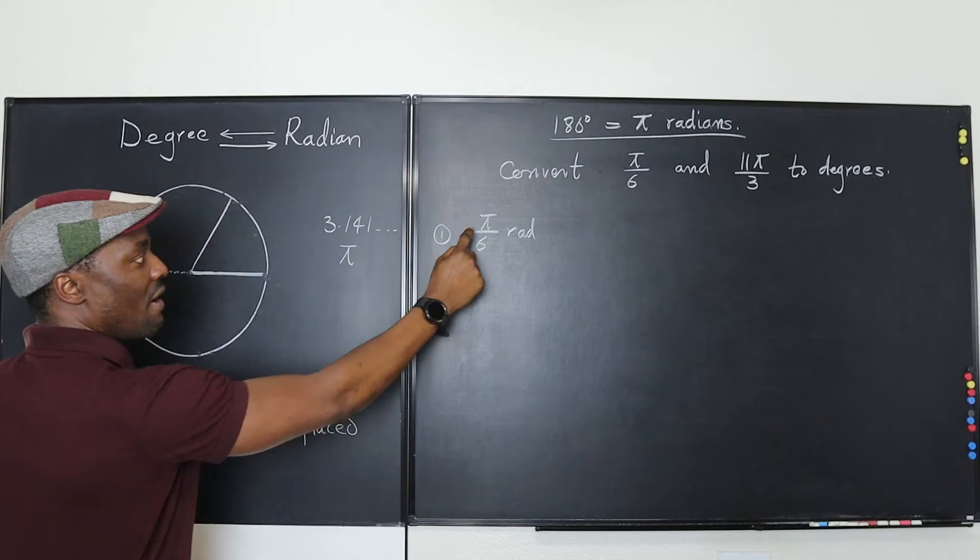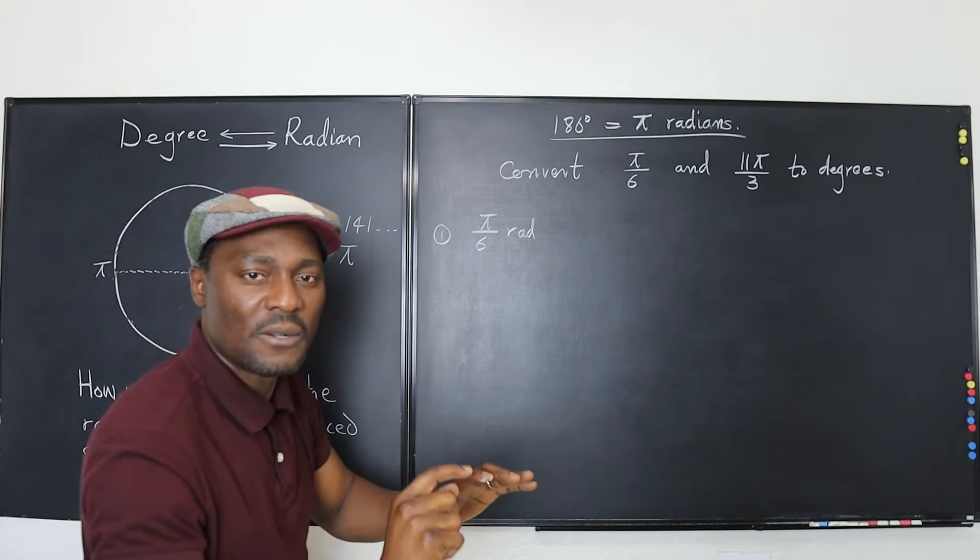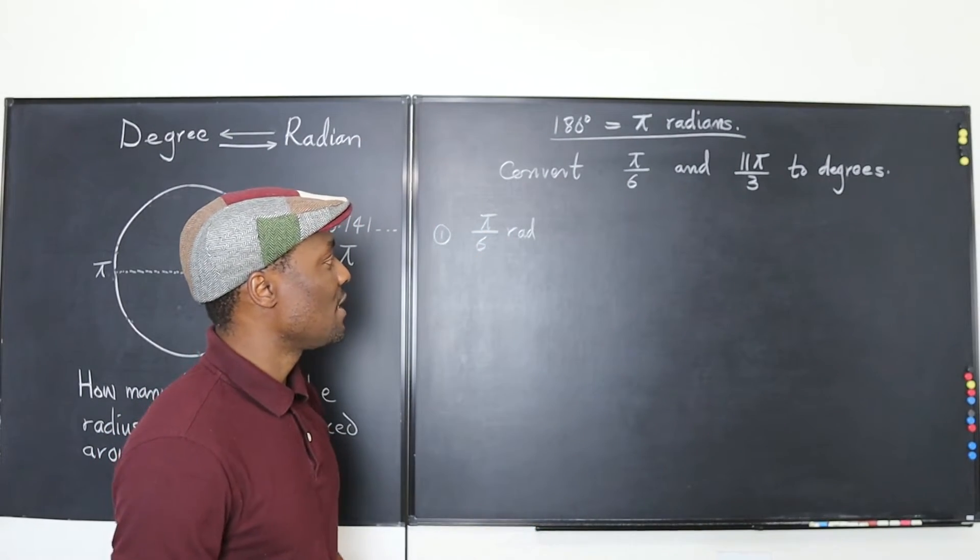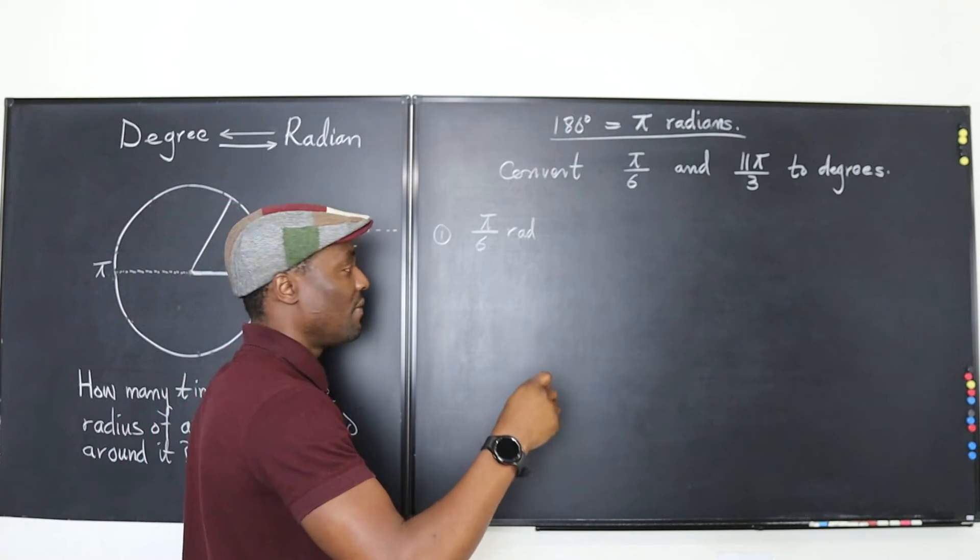If you have pi over 6, then your trip is just at the beginning. So you must be dealing with a small angle. So pi over 6 radians to degrees. Remember what I said? You just do the opposite of what we did before.